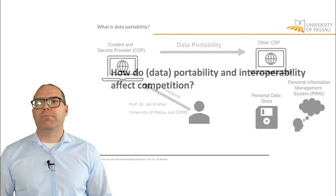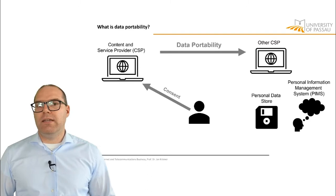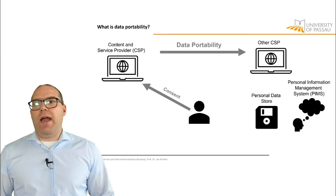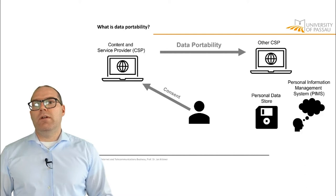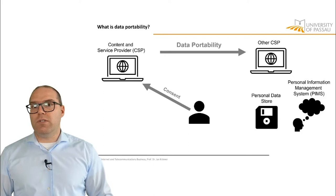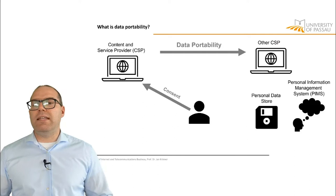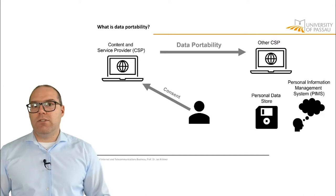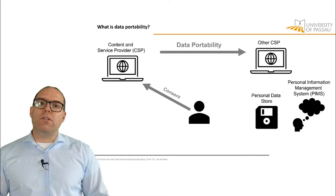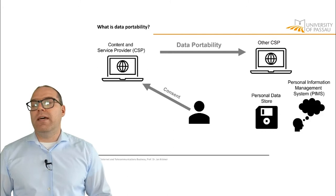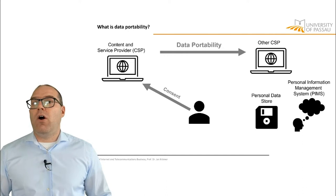First, let us clarify what is meant by data portability and what it is good for. Imagine you have data at a content and service provider (CSP) and you want to give that data to another content and service provider. Data portability means you first give consent to the CSP where your data is currently hosted, and then that CSP can give that data to another CSP. But it's not limited to that — data can also be ported to a personal data store, whether in the cloud or on your personal computer, or to what is known as personal information management systems. This is software that manages the data for you and is also able to share data on your behalf with other content and service providers.